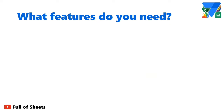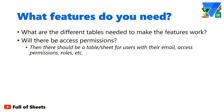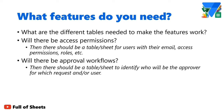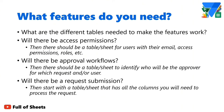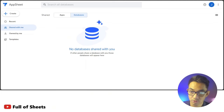Think about the features of the app you want to build and what tables are needed to make those features work. Will there be access permissions? Then there should be a table for users with their email address and permissions. Will there be approval workflows? Then there should be a table identifying who will be the approver. Will there be request submissions? Then start with a table that has all the columns needed to process that request.